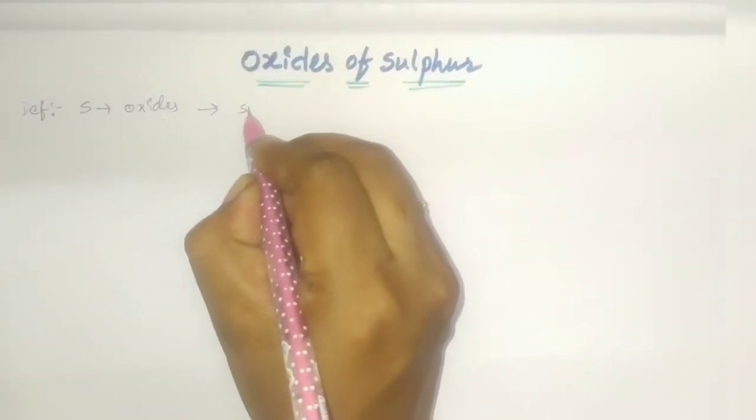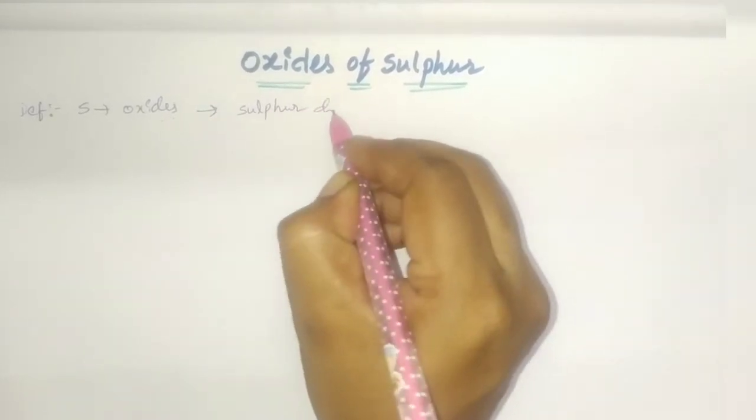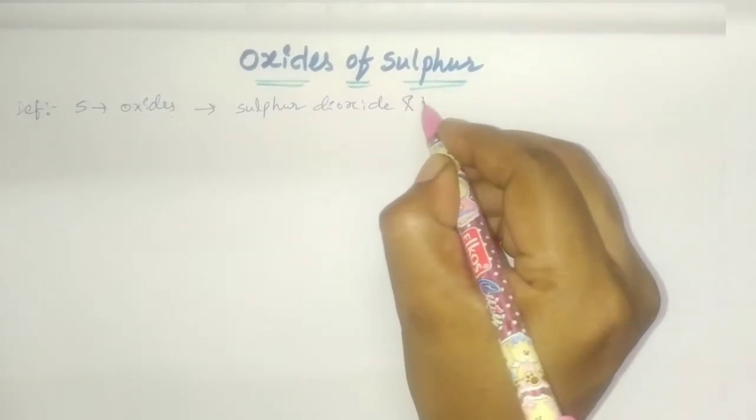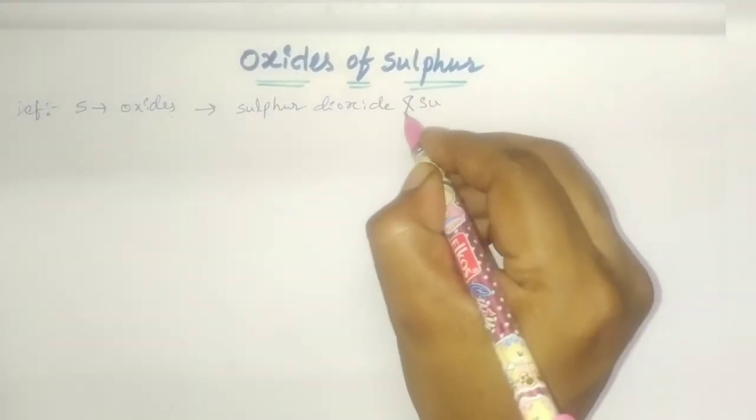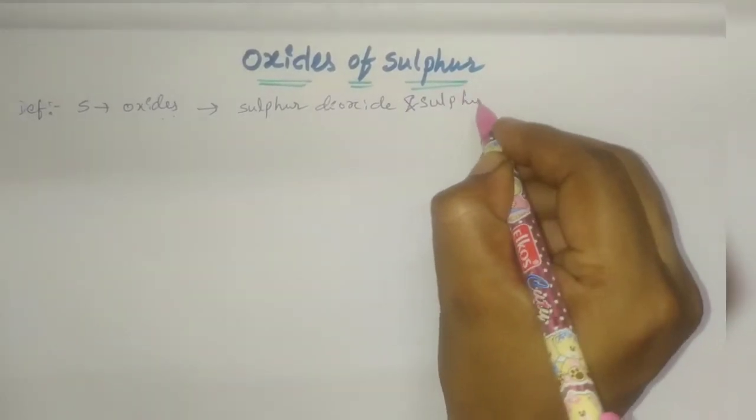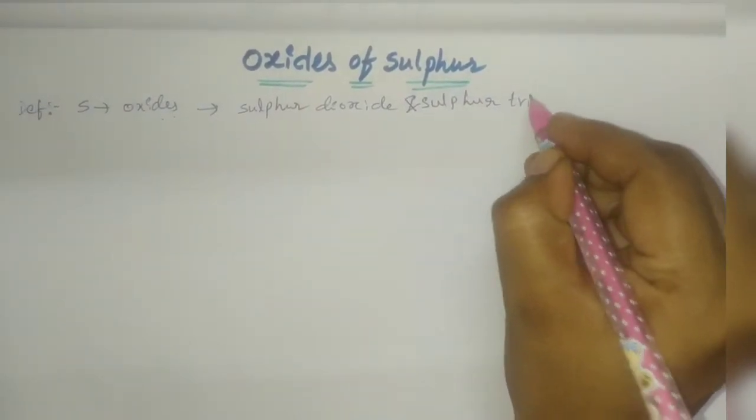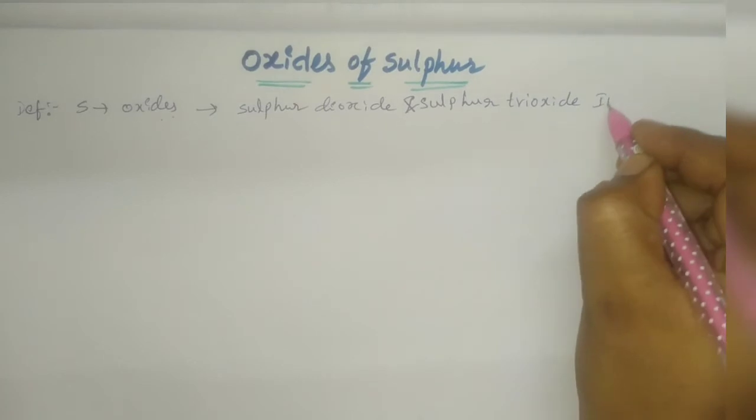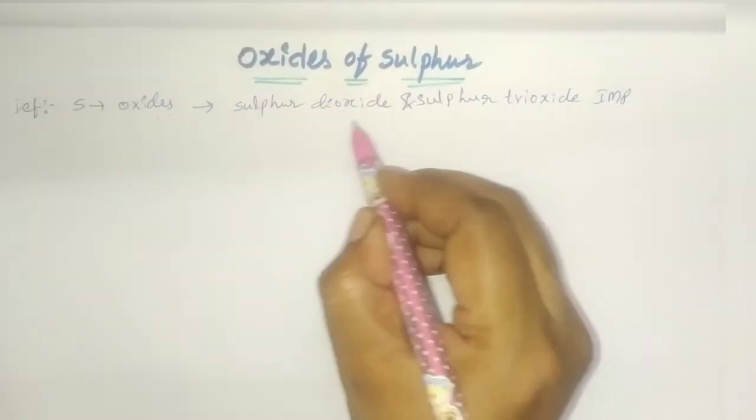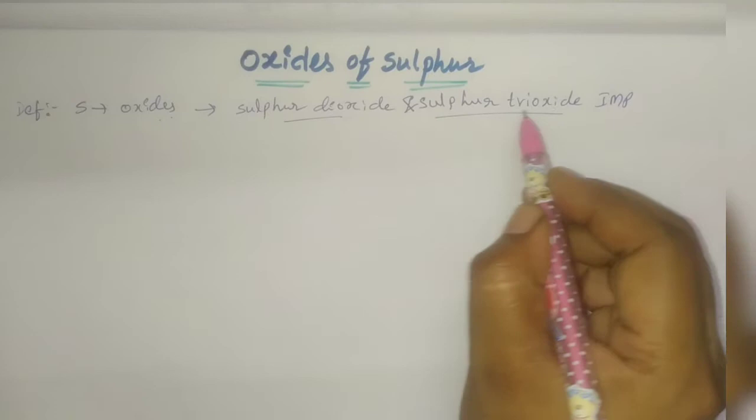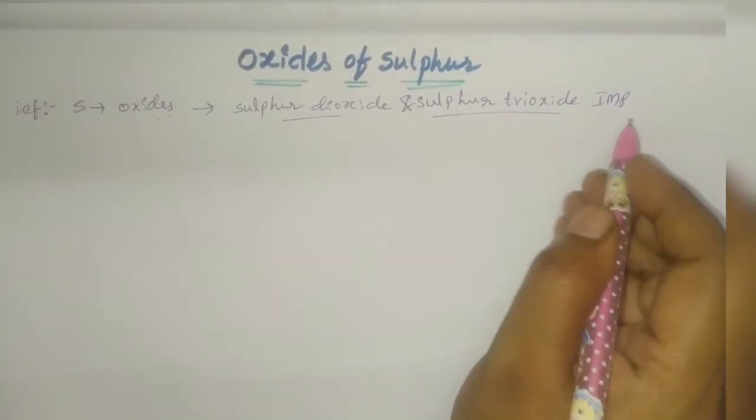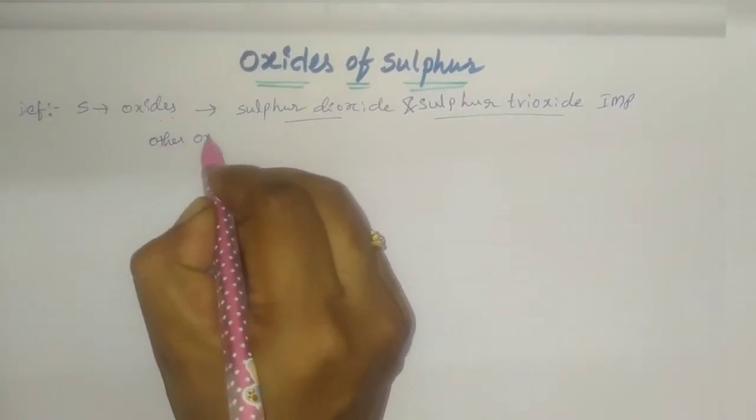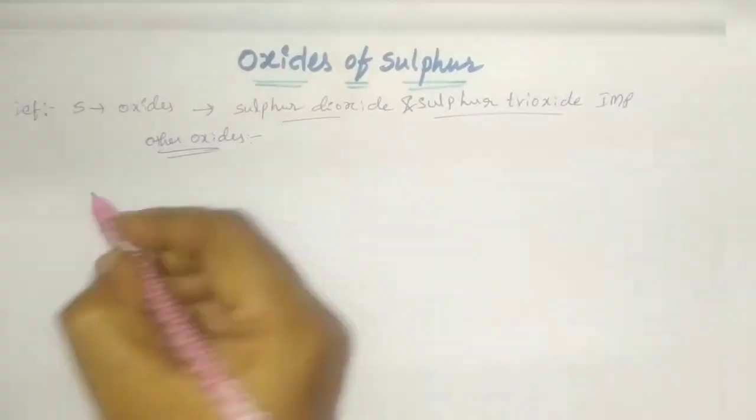Sulfur dioxide and sulfur trioxide are very important. But before going to that, there are some other oxides as well.